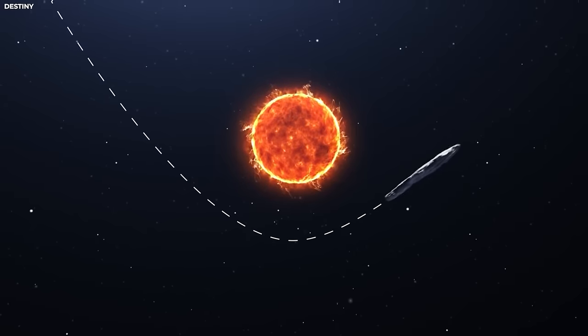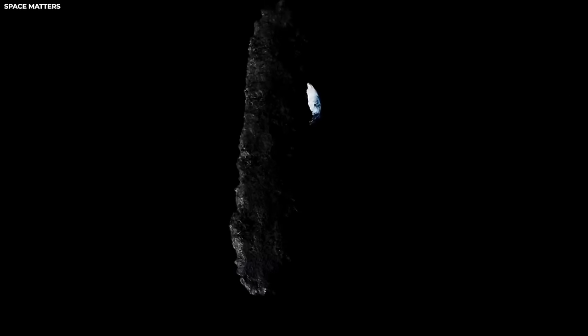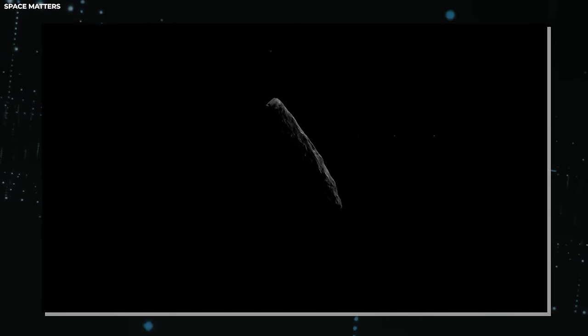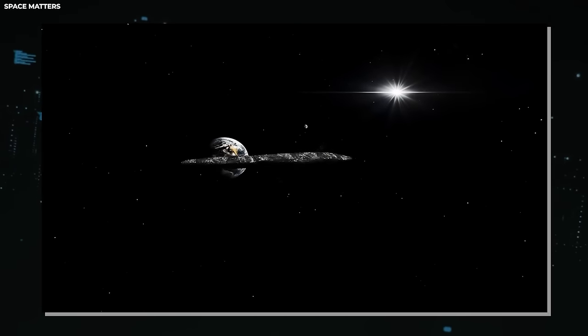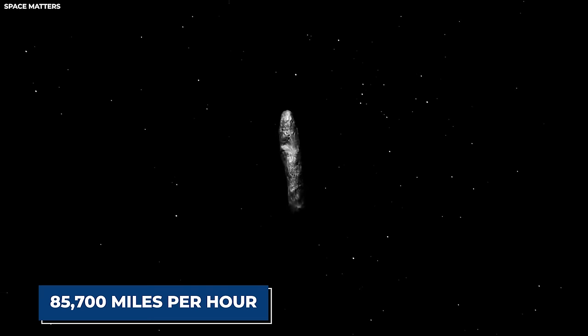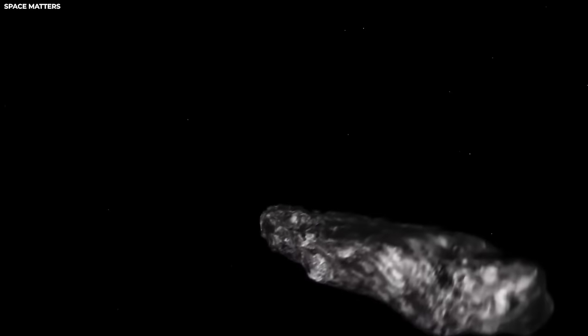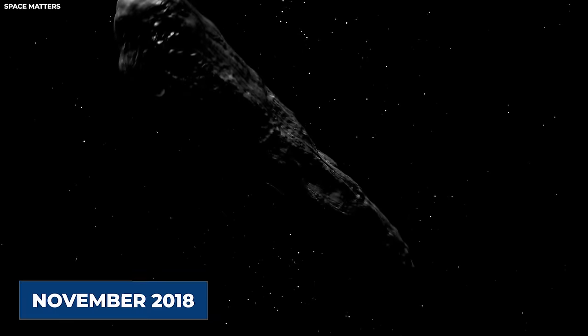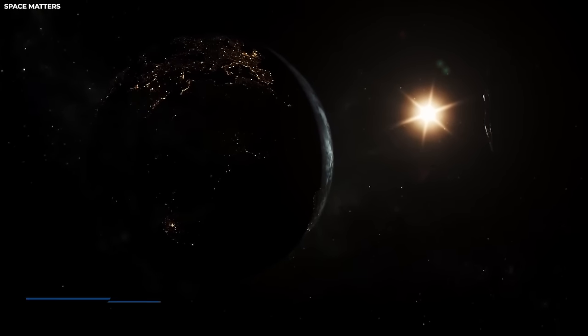This unique characteristic sets Oumuamua apart from any known solar system, asteroid, or comet, its elongated shape showcasing a ratio between length and width far exceeding any previously observed celestial body. Even as Oumuamua journeyed away from Earth, several prominent ground-based telescopes diligently tracked its trajectory. NASA's observations revealed Oumuamua hurtling through space at a staggering speed of approximately 85,700 miles per hour relative to the Sun. Its trajectory, angled approximately 20 degrees above the plane of the solar system's planetary orbits, led it beyond Mars' orbit around November 2018, with a projected passage through Jupiter's orbit in May 2018, culminating in an exit beyond Saturn's orbit by January 2019.